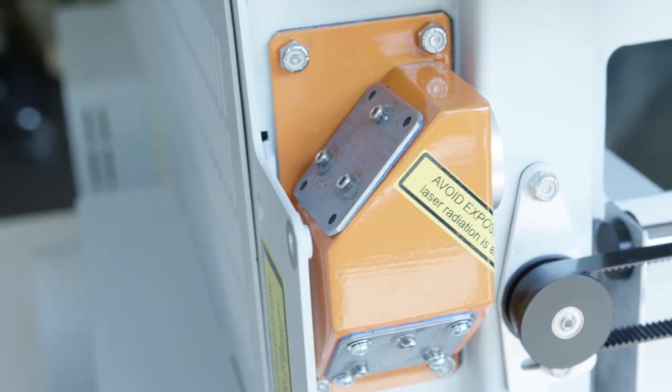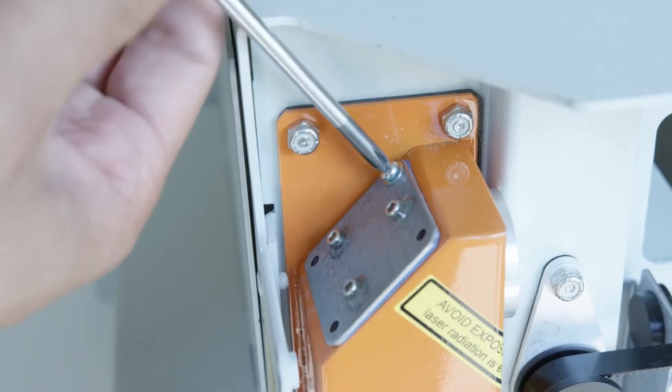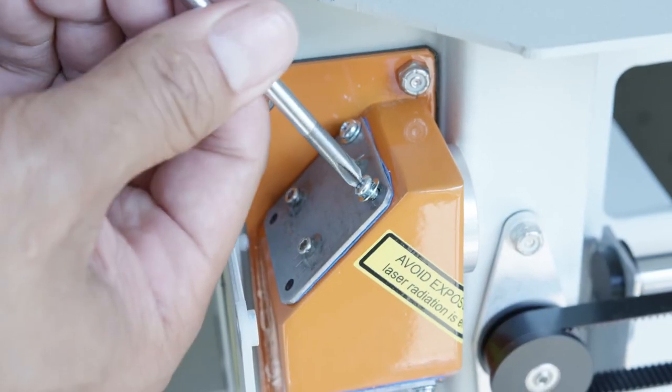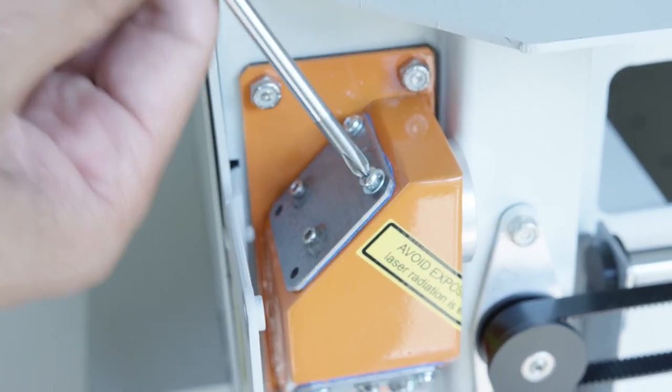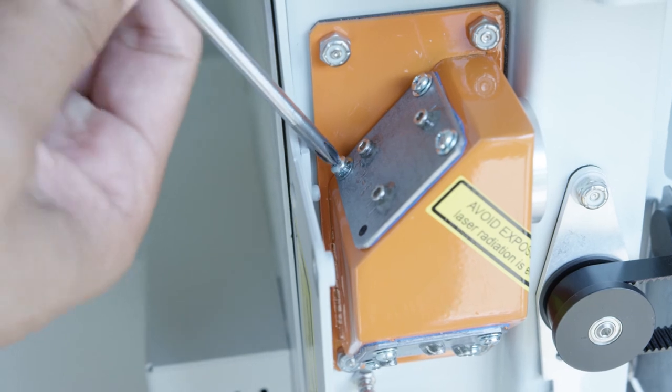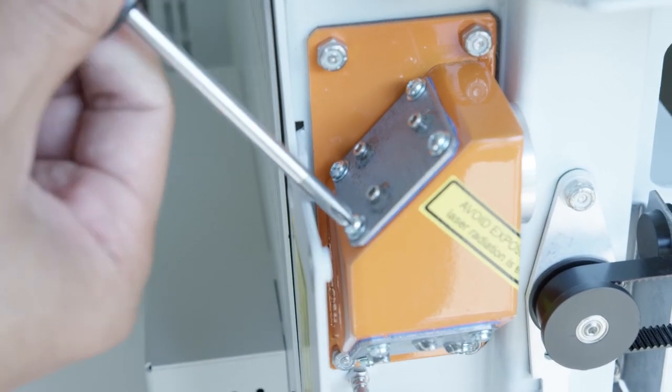Then reinsert the mirror, positioning it so the two hex screws are near the bottom and one near the top. Reinsert the four Phillips-head screws loosely at first, tightening once everything is lined up.